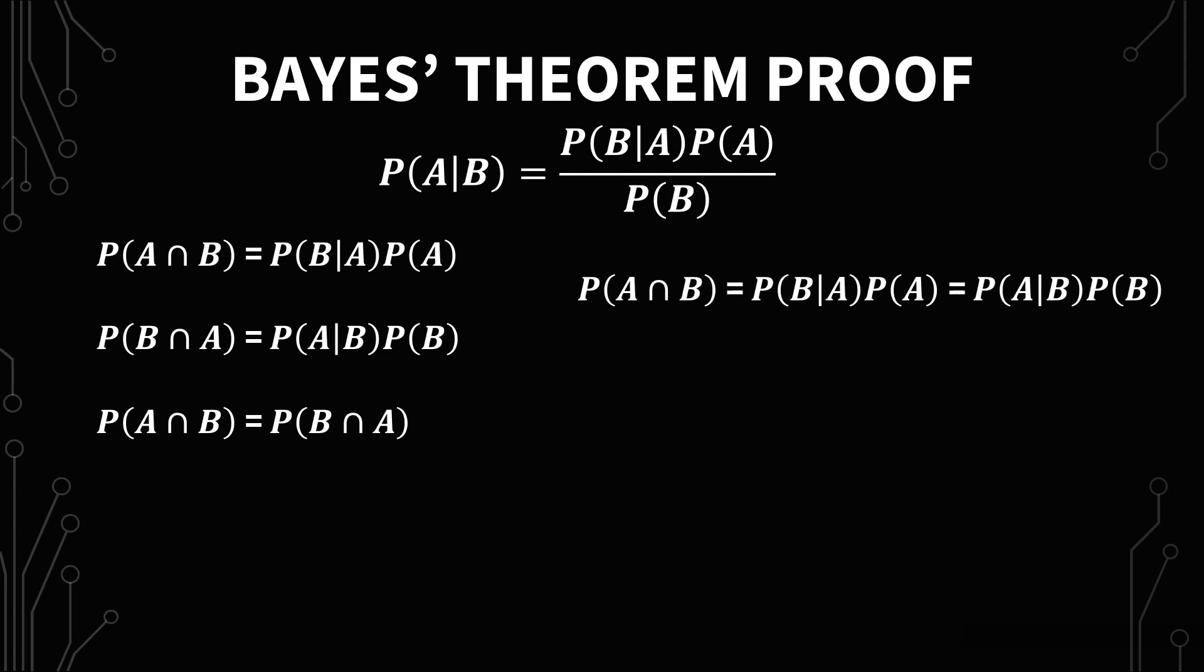So now we're getting to the last part, the manipulation to get to Bayes' theorem, which is the probability of A given B times the probability of B over the probability of B, which equals the probability of B given A times the probability of A over the probability of B. So what I did here, and I highlighted it in blue, is I divided both sides by the probability of B.